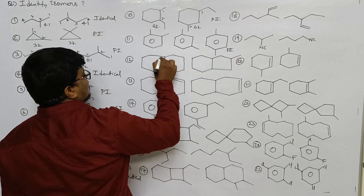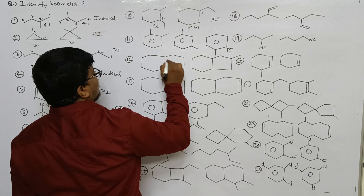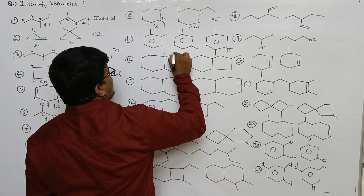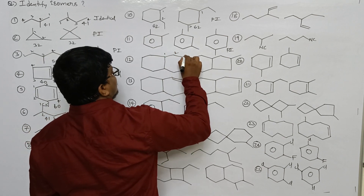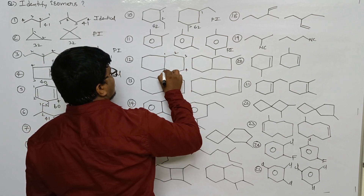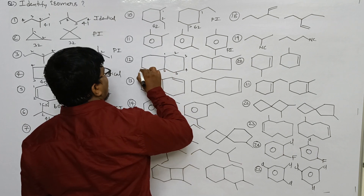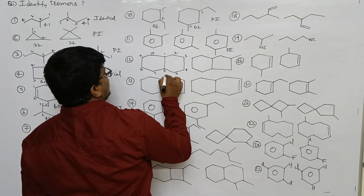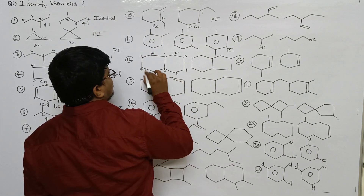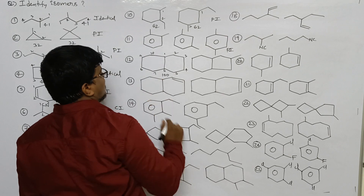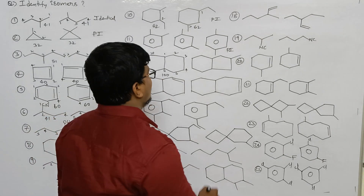Here, isomeric number: counting one through ten — main chain is ten, no branches. That gives 100. Isomeric number: here also counting one through ten — gives 100.